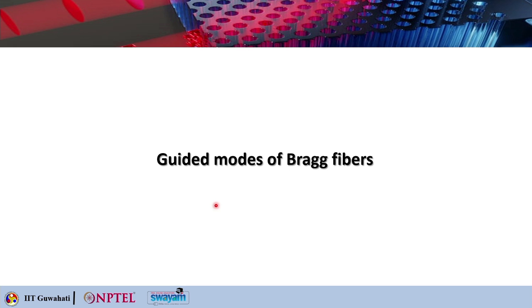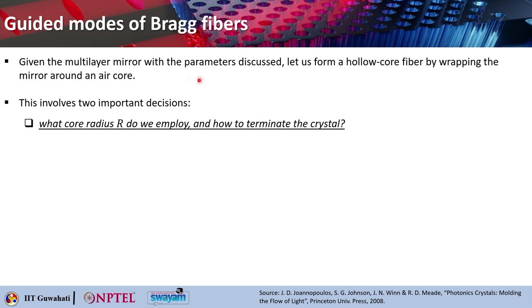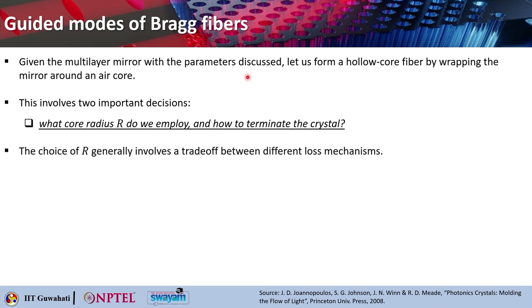Now we will look into the guided modes of Bragg fiber. Given the multilayer mirror with the parameters discussed, let us form a hollow core fiber by wrapping the mirror around an air core. This involves two important decisions: what core radius R do we employ, and how do we terminate the crystal? The choice of R generally involves a trade-off between different loss mechanisms.